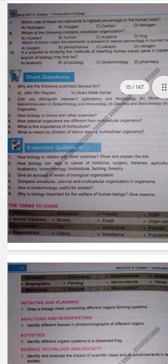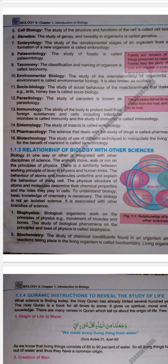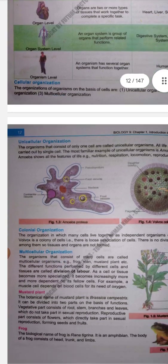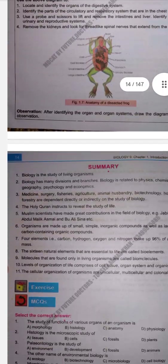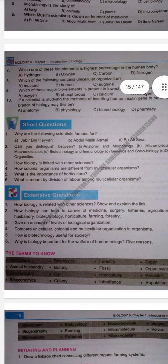Next question: How is biology related with other sciences? The relationship of biology with the sciences includes biophysics, biochemistry, biotechnology, and bio-economics. Next: How can biology lead to careers? Options include medicine, surgery, fisheries, agriculture, animal health, farming, and forestry. Refer to page number 8 — careers that require a background in biology.